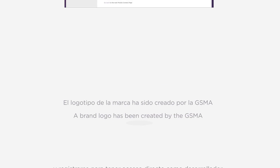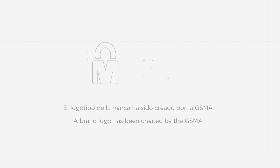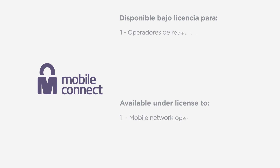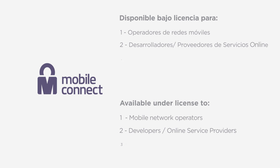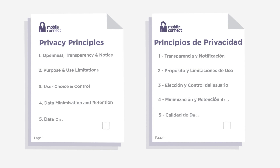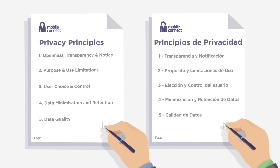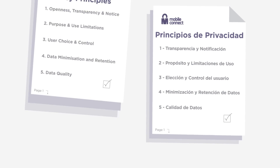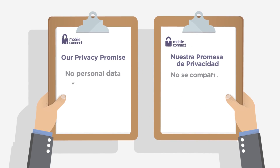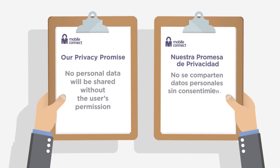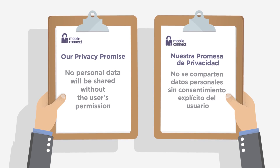To signal the availability of this new service, a brand logo has been created by the GSMA on behalf of participating operators. The mark is available to all members of the MobileConnect ecosystem: mobile network operators, developers, and technology platform partners. GSMA ask all licensees to comply with the license terms including the MobileConnect privacy principles. These principles are based on an open and honest approach to privacy, and no personal data will be shared with any third parties without the user's permission.